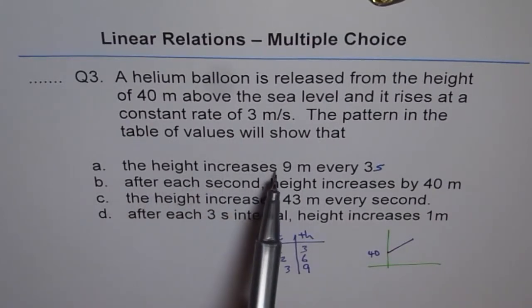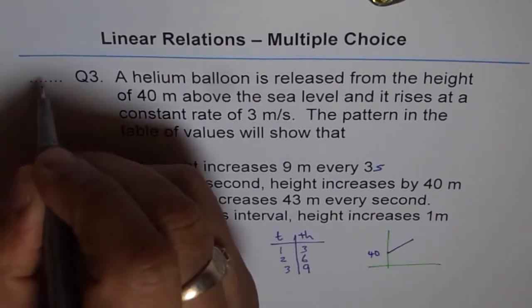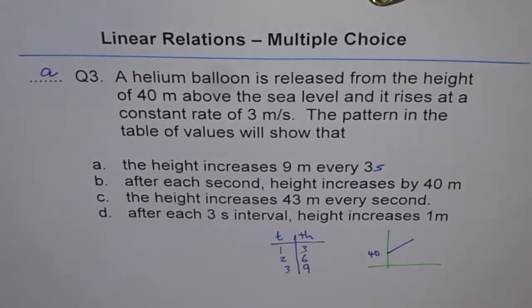Height increases 9 meters every 3 seconds. That's the right option. Correct? Other options are wrong. Thank you.